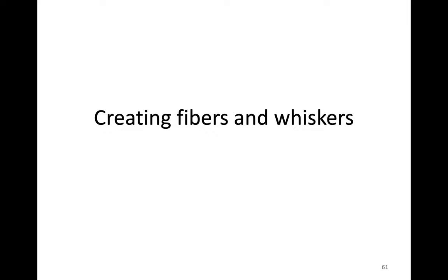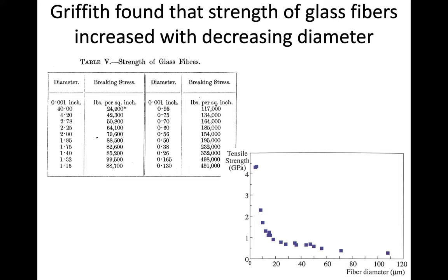Let's talk about some ways that we can more fundamentally strengthen glass. The first one is creating fibers or whiskers. Griffith, the guy we talked about who came up with the energy balance in the last module, also found that the strength of glass fibers increased when you decrease the diameter. As the diameter got smaller and smaller, the strength became larger and larger.